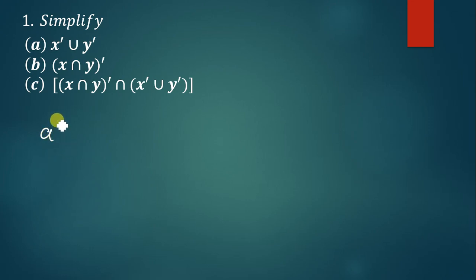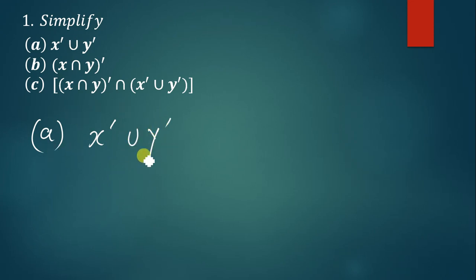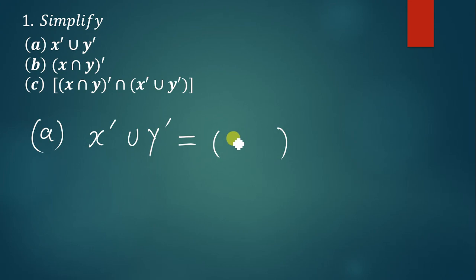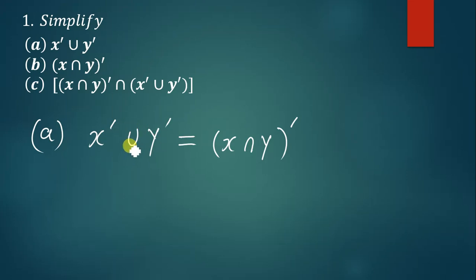Part A is x complement union y complement. Using De Morgan's Laws, whenever you have such a question, we know this is equivalent to: you open brackets, write x and y, change the sign in between, and the complement comes outside. So you put everything in brackets, change the sign in between, and factor the complement to the outside.